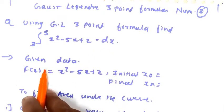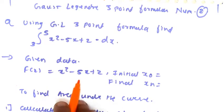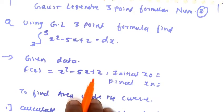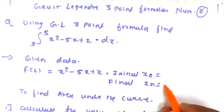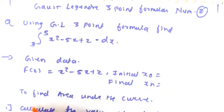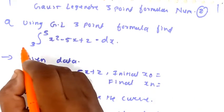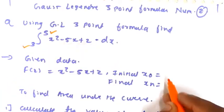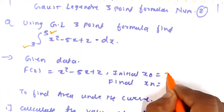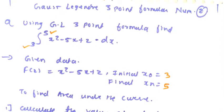The given data is the function f(x) = x squared minus 5x plus 2. We have to find out the value of x0 and xn. The lower limit is 3 and the upper limit is 5, so x0 = 3 and xn = 5.